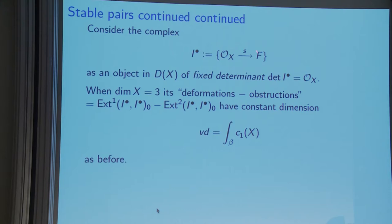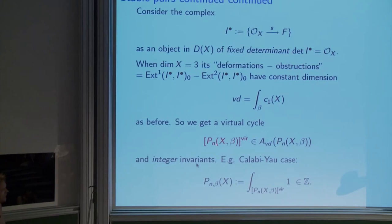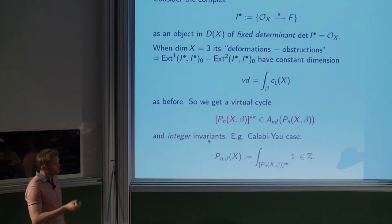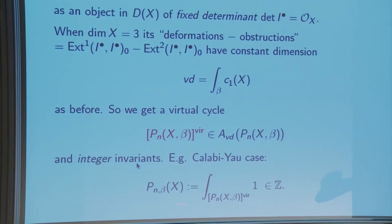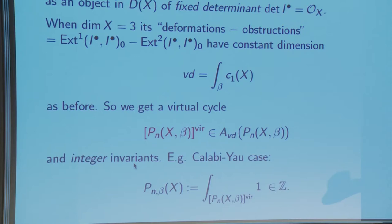This is not true for surfaces. For surfaces, linearly equivalent curves give the same complex, but for threefolds the complex determines the pair, so you can do the deformation theory of the complex and find a virtual cycle of this dimension. This is the stable pairs virtual cycle. There are now integer invariants — no automorphisms. In the Calabi-Yau case, you get integer invariants by just integrating one over the virtual cycle — taking the length of the virtual cycle. We count stable pairs on a Calabi-Yau threefold.